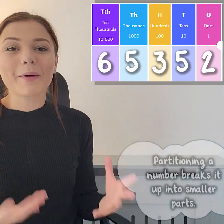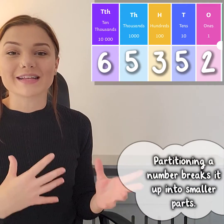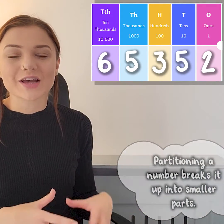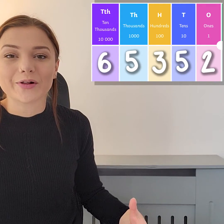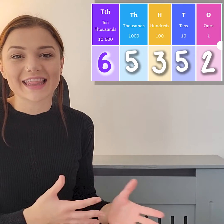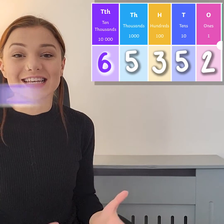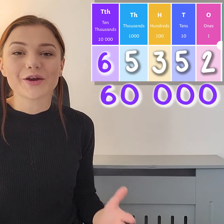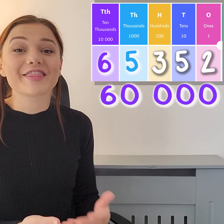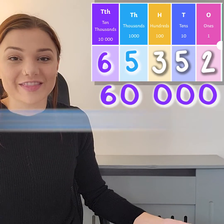When we partition a number, we break it up into smaller parts. For example, in our number we have six ten thousands, which is the same as sixty thousand. We have five thousands, which is the same as five thousand.